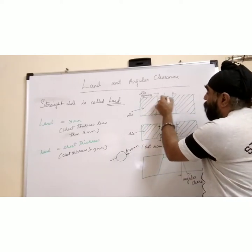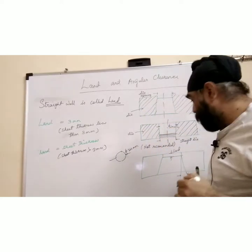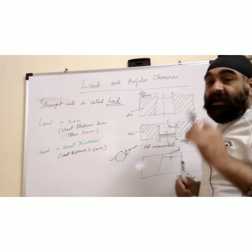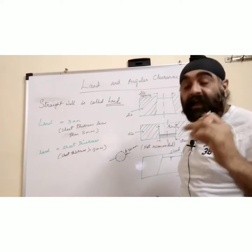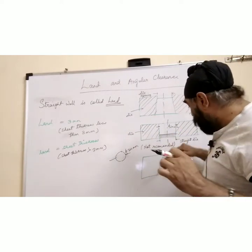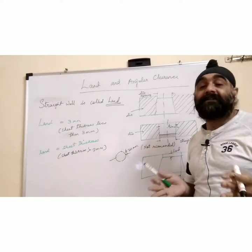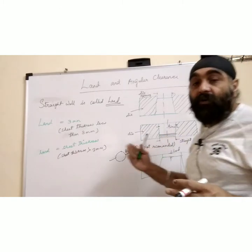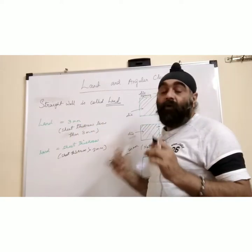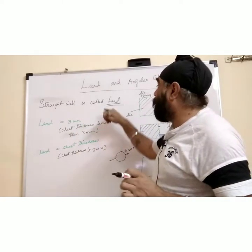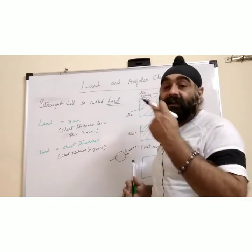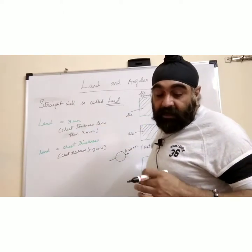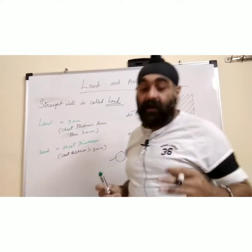In order to give the slug proper clearance, we give this portion a land, and then we give angular clearance. Angular clearance is basically a relief. The straight wall in the die is called the land — that is the inner wall where the cutting area is. We can call this as land. The blank or the slug tends to jam inside the die opening.